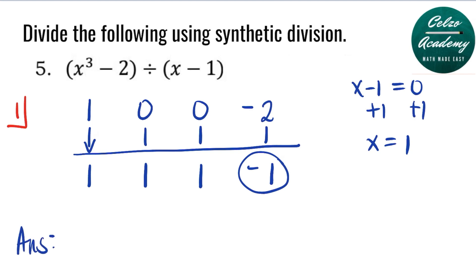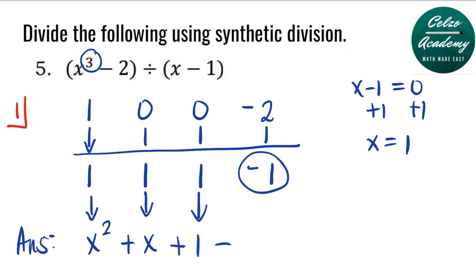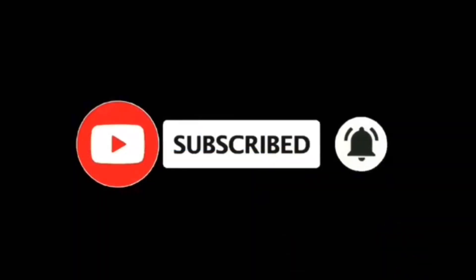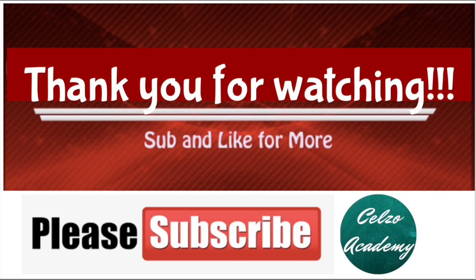The highest power of our dividend is 3, so the answer will begin with a power of 2. The first coefficient is 1, so we will have x squared. Next we will have plus x. The constant is 1, so we have plus 1. And the remainder is negative 1, so we have plus negative 1 over the divisor x minus 1. So the answer for number 5 is x squared plus x plus 1 plus negative 1 over x minus 1. Thank you for watching, and please consider subscribing to my channel at Celso Academy.